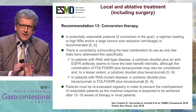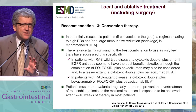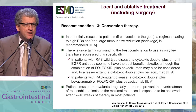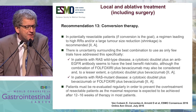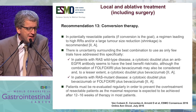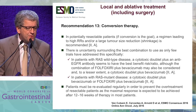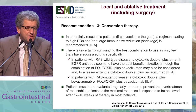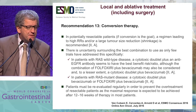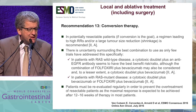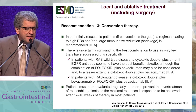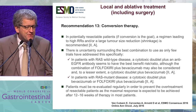Regarding conversion treatment: in potentially resectable patients where conversion is the goal, a regimen leading to a high response rate and/or large tumor size reduction is recommended. In patients with RAS wild-type disease, a cytotoxic doublet plus an anti-EGFR antibody seems to have the best benefit-risk ratio, although FOLFOX or FOLFIRI plus bevacizumab may also be considered. In patients with RAS mutant disease, a cytotoxic doublet plus bevacizumab or FOLFOX/FOLFIRI plus bevacizumab is recommended.